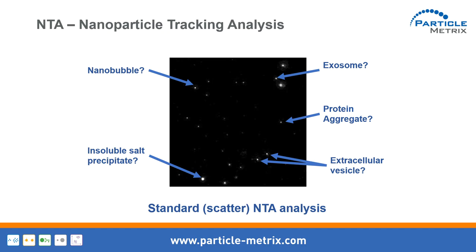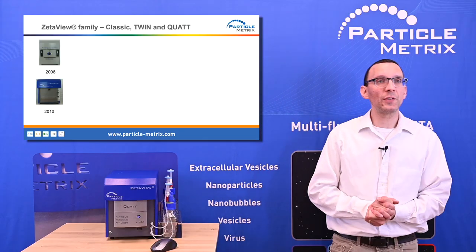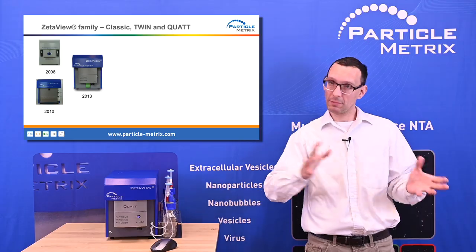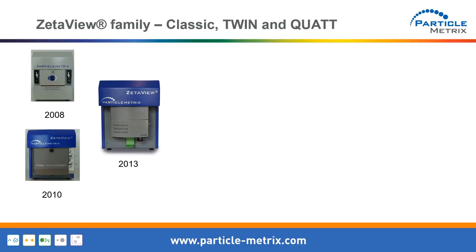Let me give a brief introduction to the history of ParticleMetrics. The first instrument in 2008 was a zeta potential measurement instrument. In 2010 we added size and concentration measurement, and in 2013 we added the fluorescence option.